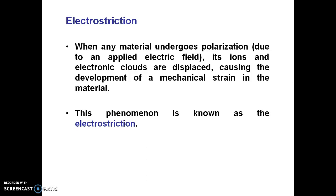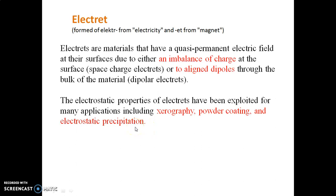The next phenomenon is electrostriction. When any material undergoes polarization due to the application of an electric field, its ions and electronic clouds are displaced — that is polarization. This causes the development of mechanical strain in the material, and that phenomenon is called electrostriction.